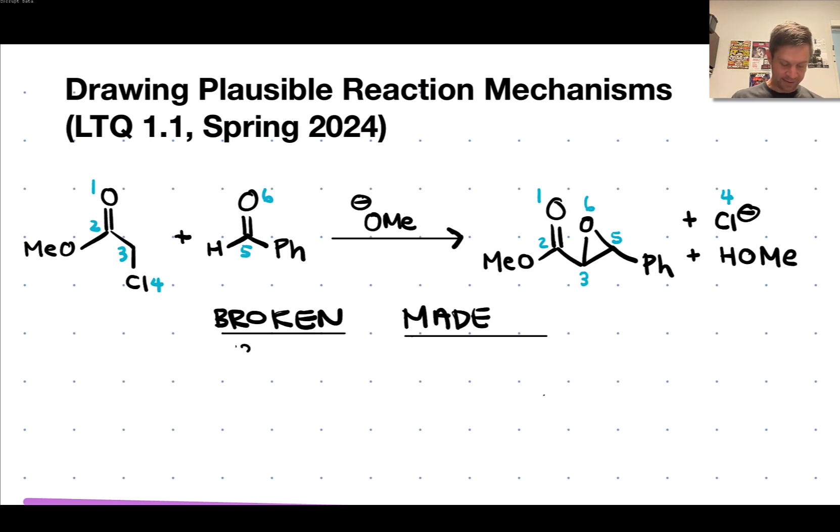Now we can get a sense of the bonds made and broken. We can notice that the C3-Cl bond is broken here and no bond is made to the chlorine. We can also notice that there are implied hydrogens at C3 and one of those is retained in the product, but one is missing, so one of the bonds broken is C3-H. We should also notice that the bond between C5 and O6 goes from a double to a single bond, so the pi bond between C5 and O6 is also broken.